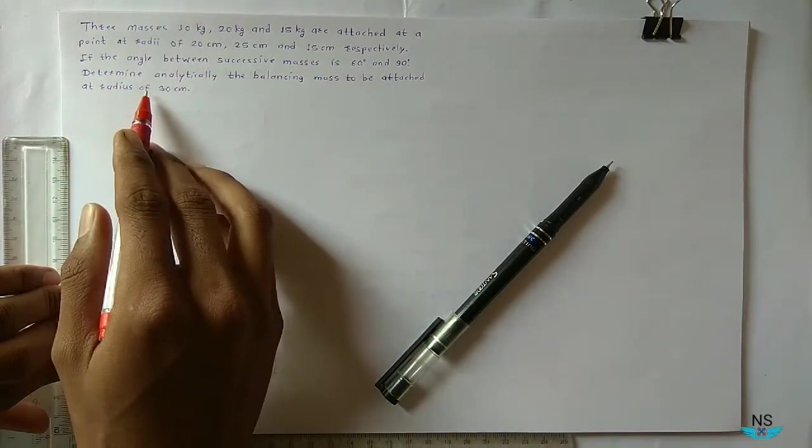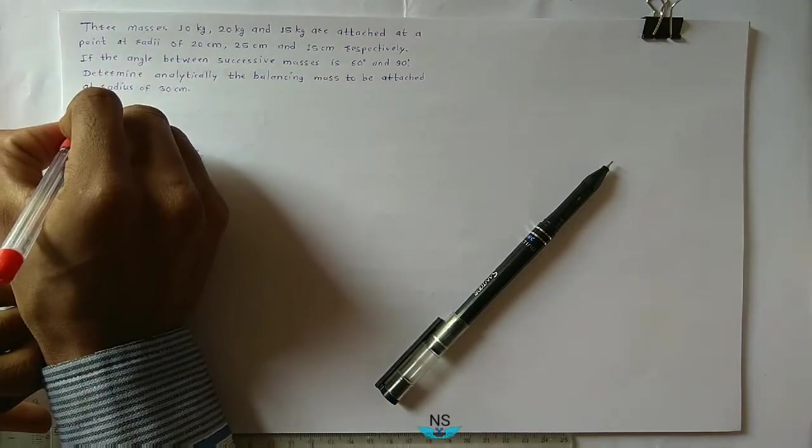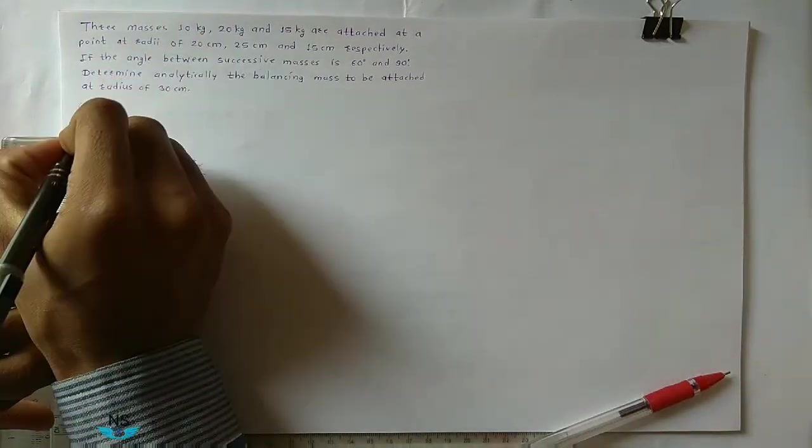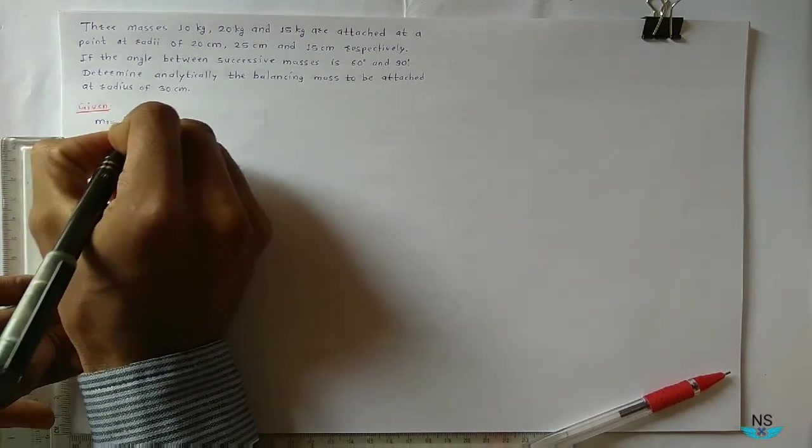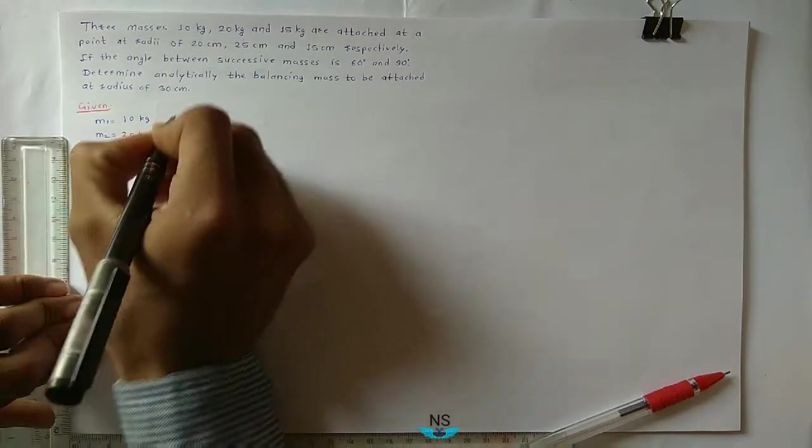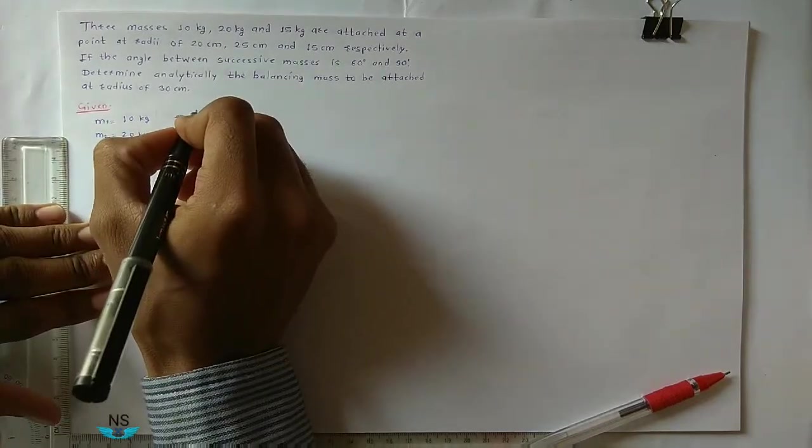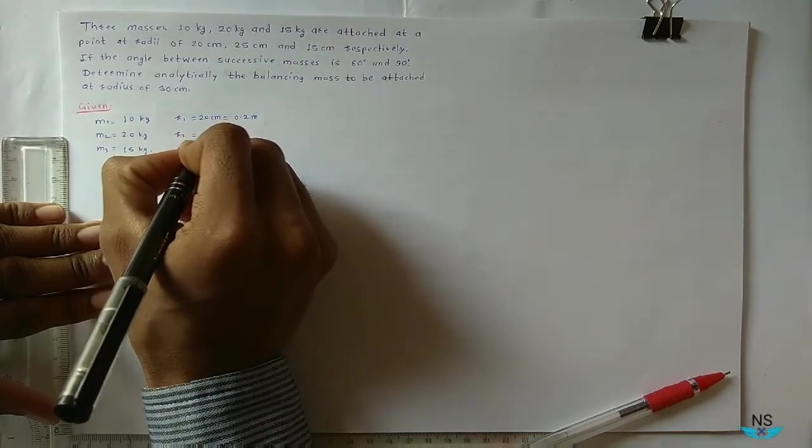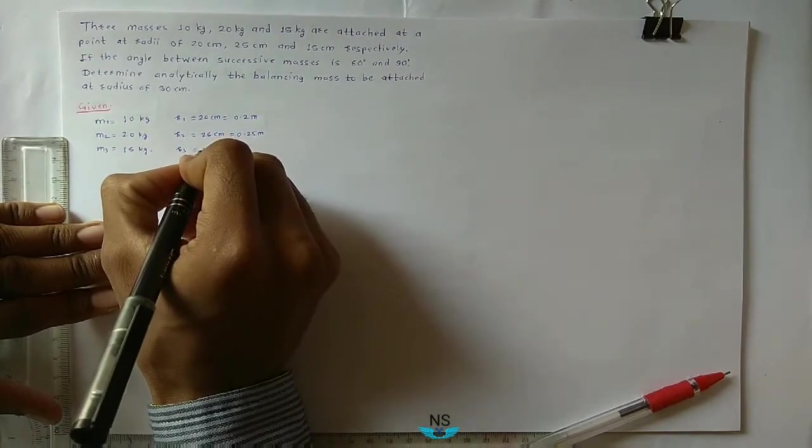Now what is given? First write down given. Three masses M1, M2, M3 are given: 10 kg, 20 kg and 15 kg. Three radii are given for each mass: r1 is 20 cm, that is 0.2 meter, r2 is 25 cm, that is 0.25 meter, r3 is 15 cm, that is 0.15 meters.